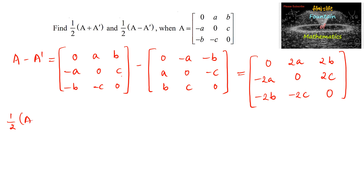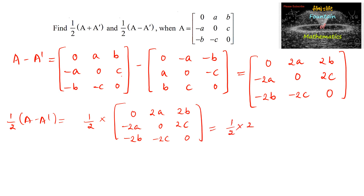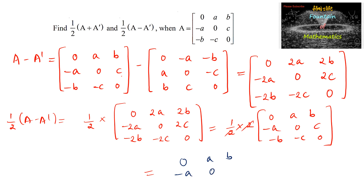So (1/2) times (A − Aᵀ) equals (1/2) times the matrix with entries 0, 2A, 2B; −2A, 0, 2C; −2B, −2C, 0. Taking out the factor of 2, we get the matrix 0, A, B; −A, 0, C; −B, −C, 0, which is the same as the original given matrix A.